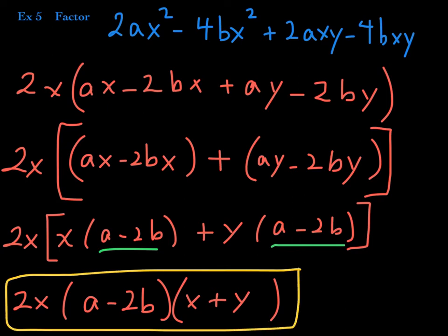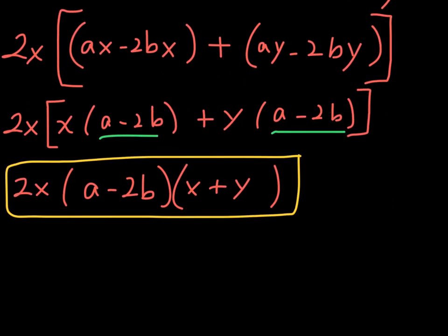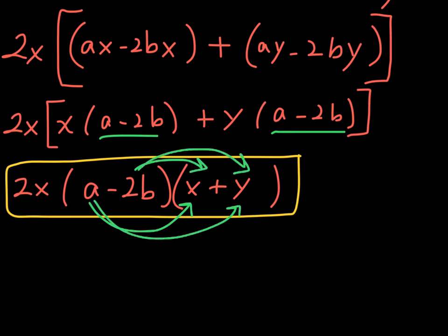Again, you can distribute to check your work. If you choose to distribute, first distribute the two binomials, and then distribute the 2X at the end. That's how you verify you get the original polynomial back.